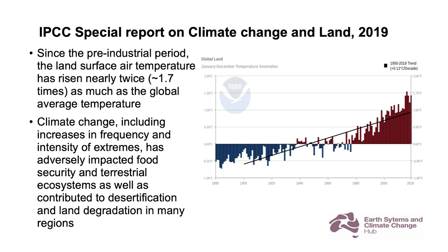That's what's shown here in these graphs. The increases go from essentially minus 0.5 degrees Celsius up to more than one, nearly 1.3 degrees Celsius — in other words, a warming of 1.8 degrees in land average temperature.